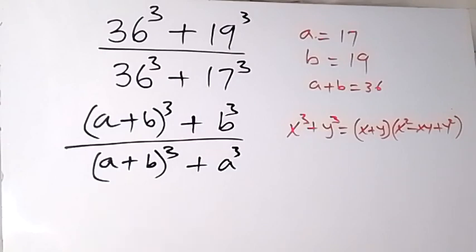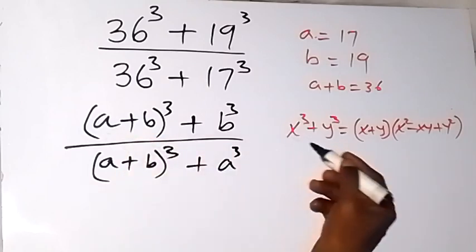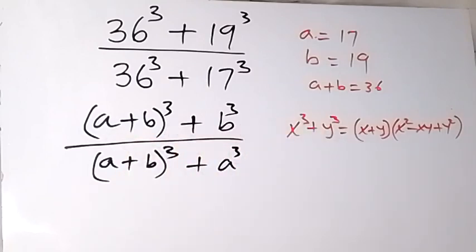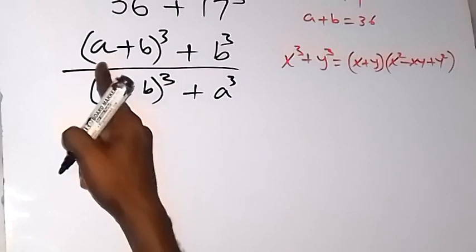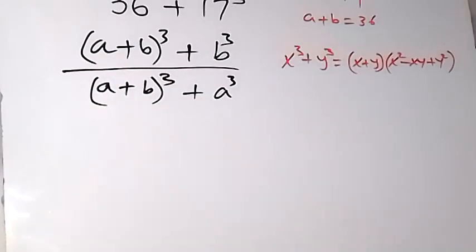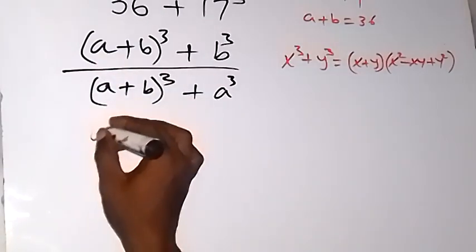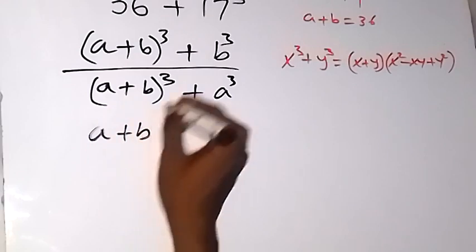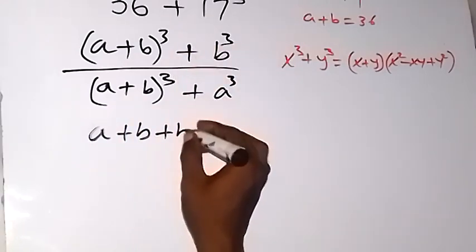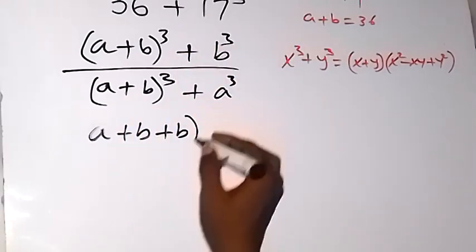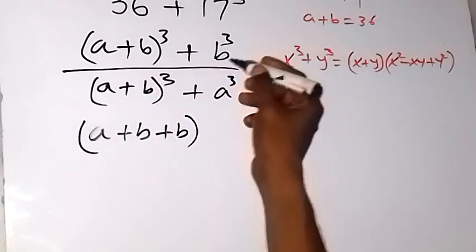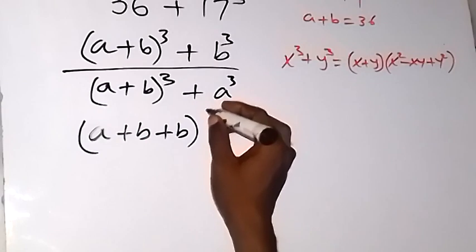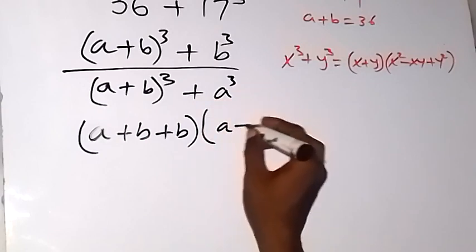When we apply this identity to the numerator, we treat (a plus b) as x and b as y. So x plus y becomes (a plus b) plus b. Then times x squared, which is (a plus b) squared.